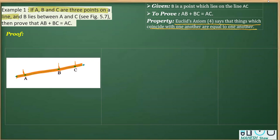And it's also mentioned that point B lies between A and C. Well, what we need to prove here is that AB plus BC is equal to AC.